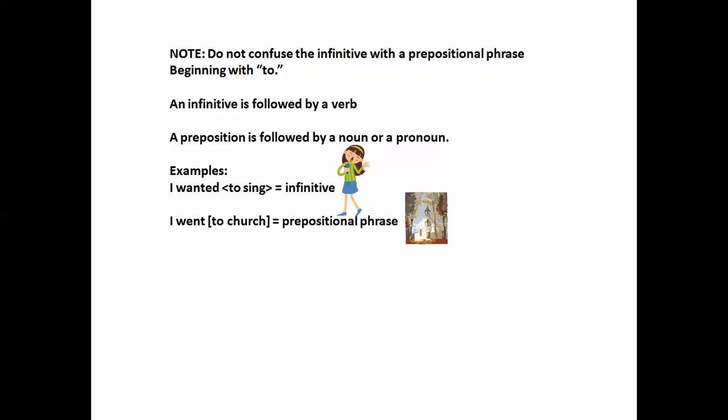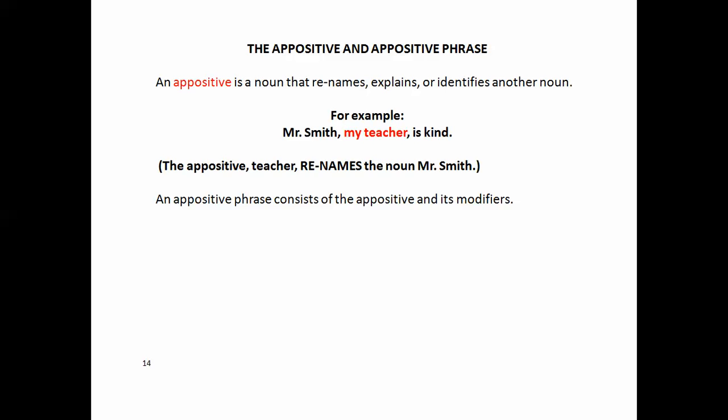And the final type of phrase that we're going to study is called the appositive. An appositive is a noun that renames, explains, or identifies another noun. For example, Mr. Smith, my teacher, is kind. The appositive teacher renames the noun Mr. Smith. An appositive phrase consists of the appositive and its modifiers. And you will notice that when there's an appositive, it has commas. A comma before and a comma after to set it off from the rest of the sentence because it's just additional information. You could say, Mr. Smith is kind and still have a sentence. But my teacher gives you additional information that renames or explains who Mr. Smith is.